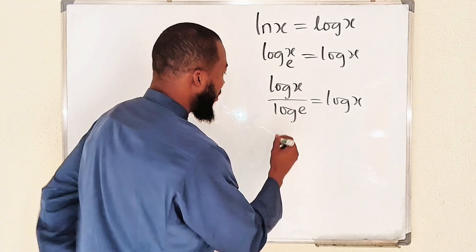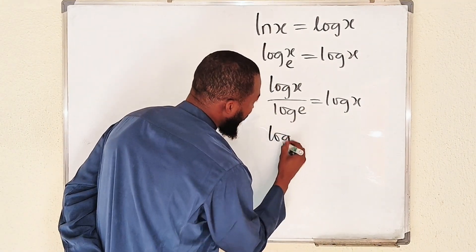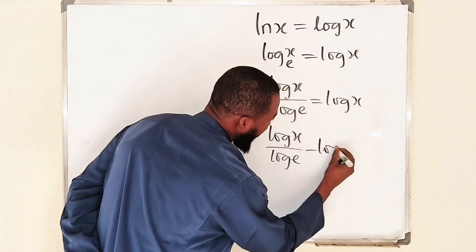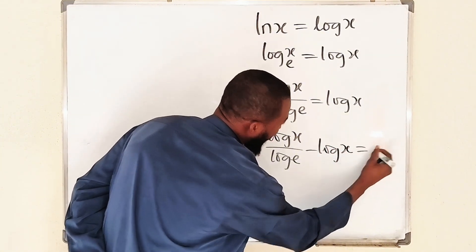So let me bring this one inside. We have log of x divided by log of e minus log of x equal to 0.